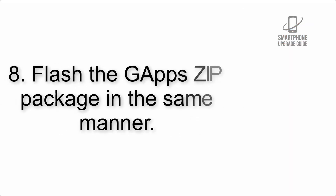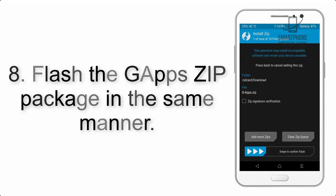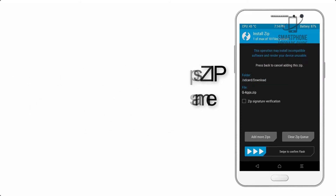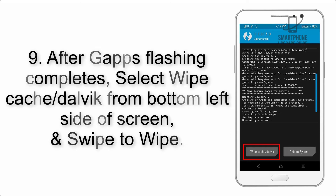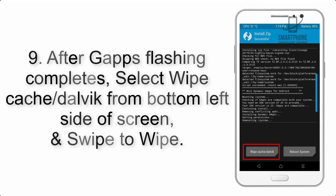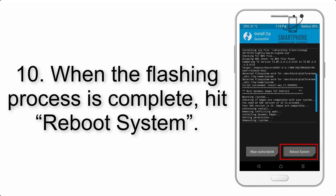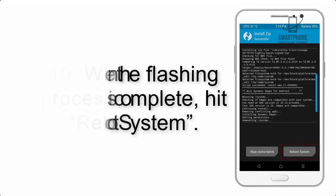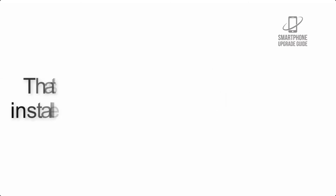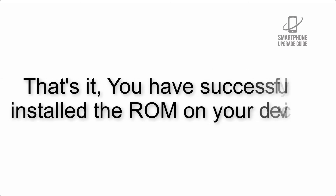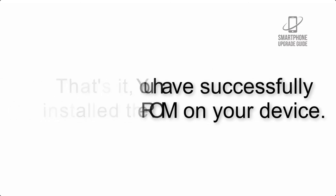Step 8: Flash the GApps zip package in the same manner. Step 9: After GApps flashing completes, select Wipe Cache and Dalvik from the bottom left side of the screen and swipe to wipe. Step 10: When the flashing process is complete, hit Reboot System. That's it — you have successfully installed the ROM on your device.